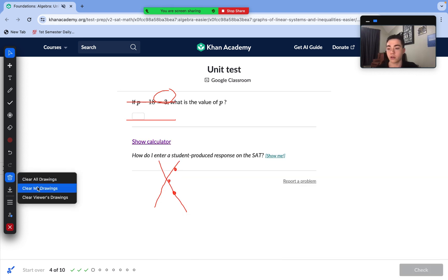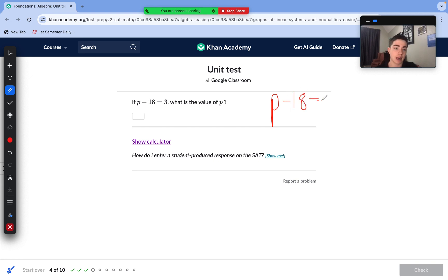Moving to question number 4 here. Super easy, we just have an equation. P minus 18 equals 3. What is the value of P? Whenever we have any equations, no matter how difficult they are, the goal is always to isolate our variable. So how we isolate our P variable, we have P minus 18 equals 3. To get it by itself, we need to get rid of the 18. To get rid of minus 18, we add 18 to both sides. We do 3 plus 18 on our right side, that's 21. So P equals 21. The value of P is 21.